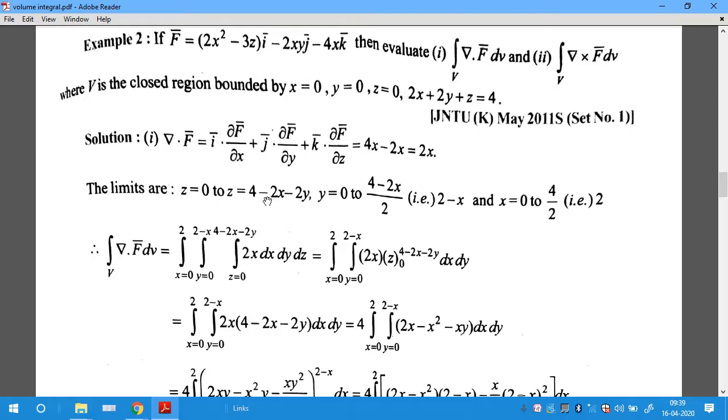The limits of z: z varies from 0 to 4-2x-2y because the limits are in terms of x and y. The y limits are 0 to (4-2x)/2, because in the xy-plane, z=0. Remove z to obtain y in terms of x.